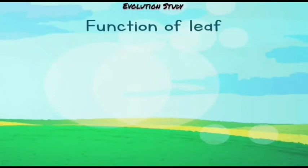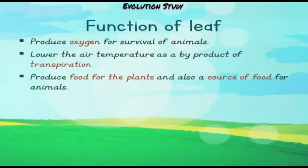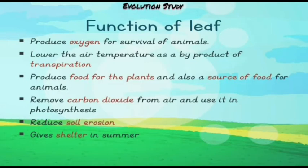Now let's talk about the functions of the leaf. It produces oxygen for the survival of animals. It lowers the air temperature as a byproduct of transpiration. It produces food for the plants and is also a source of food for animals. It removes carbon dioxide from the air and uses it in photosynthesis. It reduces soil erosion and gives shelter in the summer.